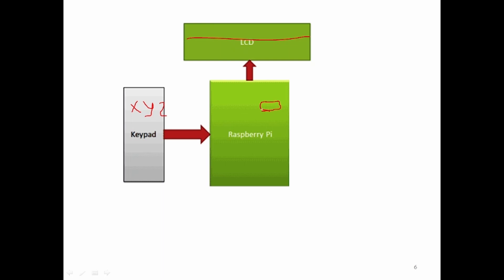After saving the password, it will restart and ask for the password from a new user. So basically, admin will set the password once, and then the system will reboot or restart. The admin password is already stored in memory, and now the Raspberry Pi code will display a message on the LCD saying 'enter the password' for the new user. The new user will enter the password from the keypad. We will set the length of the password — let's say five digits. If the password is correct, then it will allow the user to reset the password. Multiple things you can do: turn on the light, send a message, or rotate the motor.